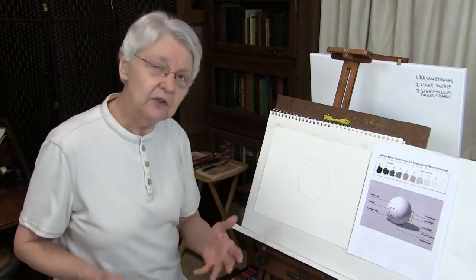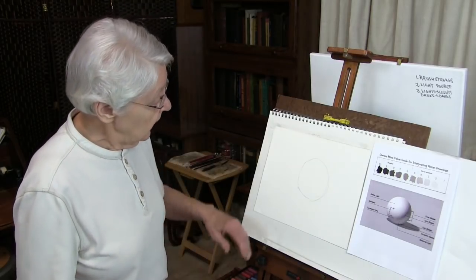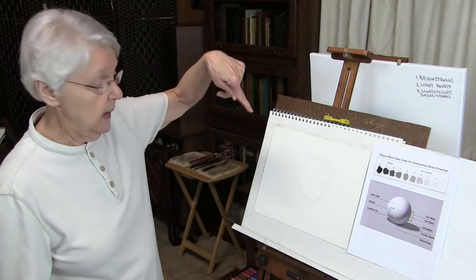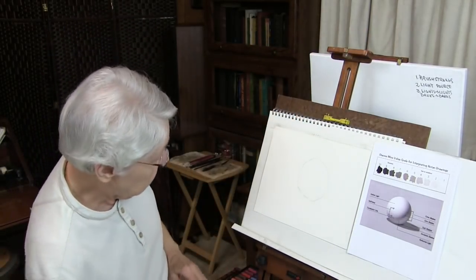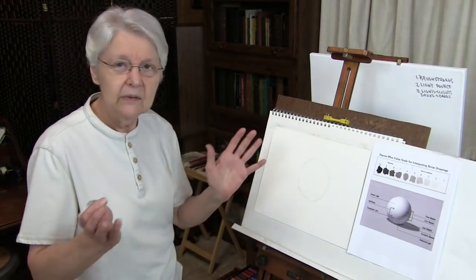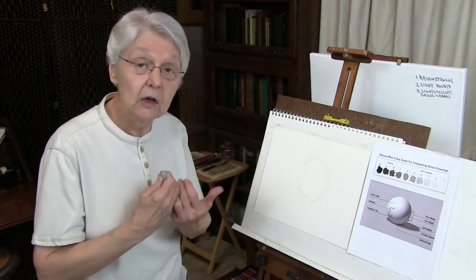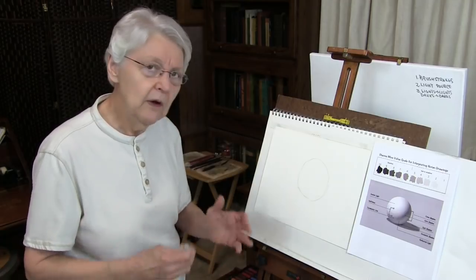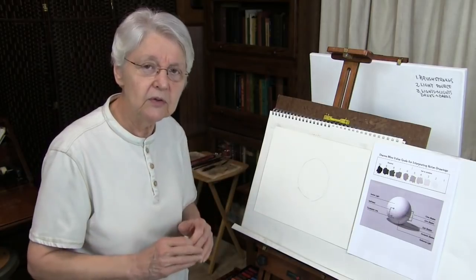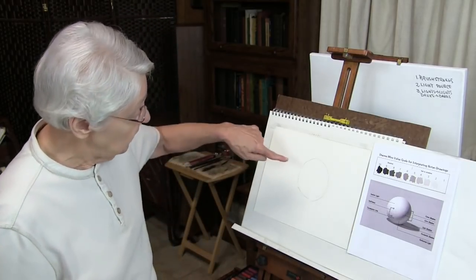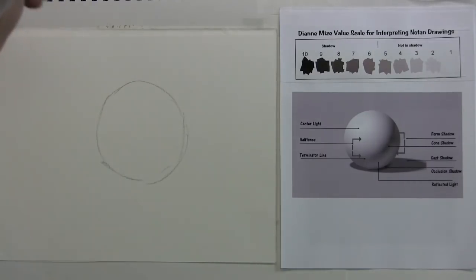Now we have a shape. The next thing we have is the light source. Where is the light source? It could be anywhere — up here going this way, coming from behind, coming down from above. The light source could be coming from just about anywhere. The important thing is to look for where the light source is and then look for how that is affecting the object. To simplify this demonstration, I'm going to assume the light source is coming from right here.